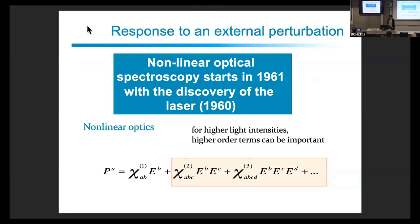Non-linear optical spectroscopy started in 1960 with the discovery of the laser. It's quite obvious that if you go to higher order terms you need higher intensities, otherwise the non-linear terms are too small to be detected compared to the linear ones. With the laser we can have enough intensity so that all these higher order terms come into play and can be detected.